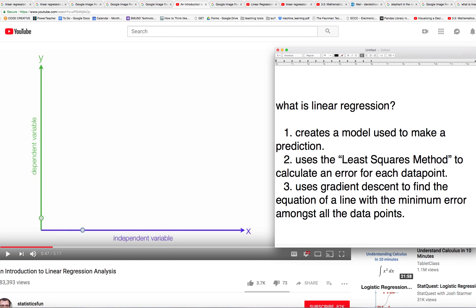This is my version of what is linear regression. What is it? It is a strategy in machine learning that is used to create a model that can be used to make a prediction.